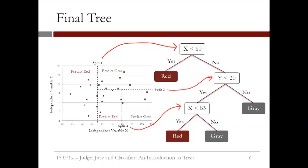Also, make sure you always start at the top of the tree. The x less than 85 split only counts for observations for which x is greater than 60 and y is less than 20. In the next video, we'll discuss how CART decides how many splits to generate and how the final predictions are made.